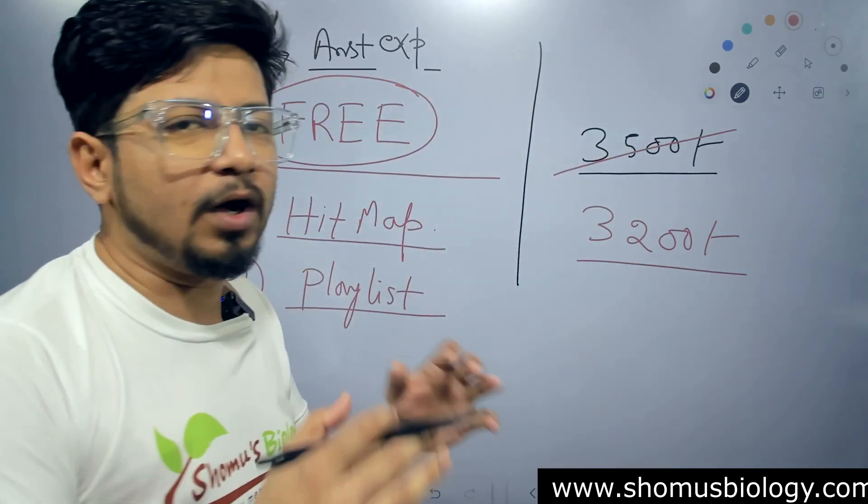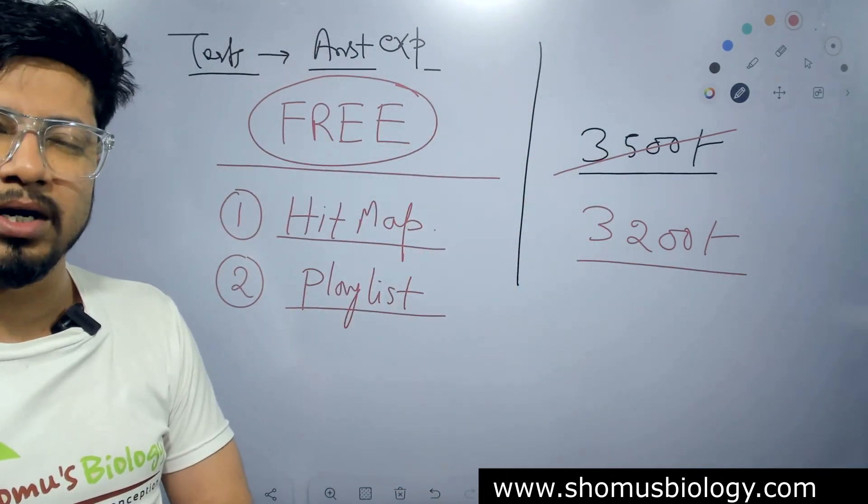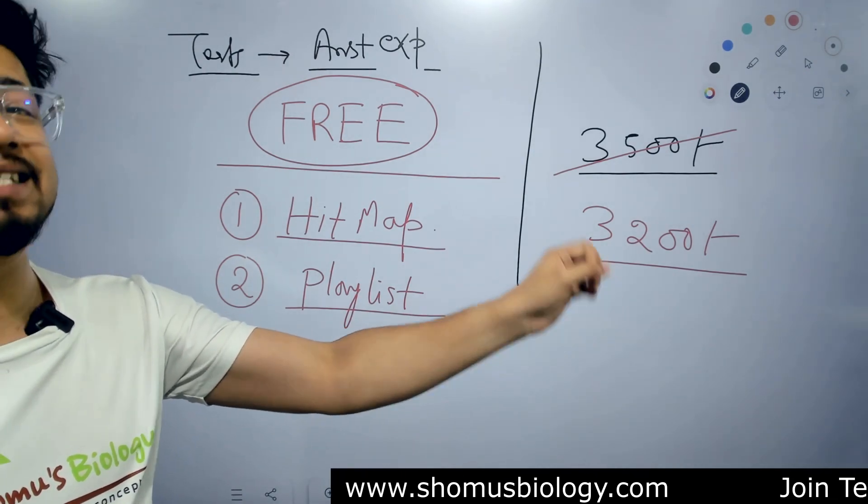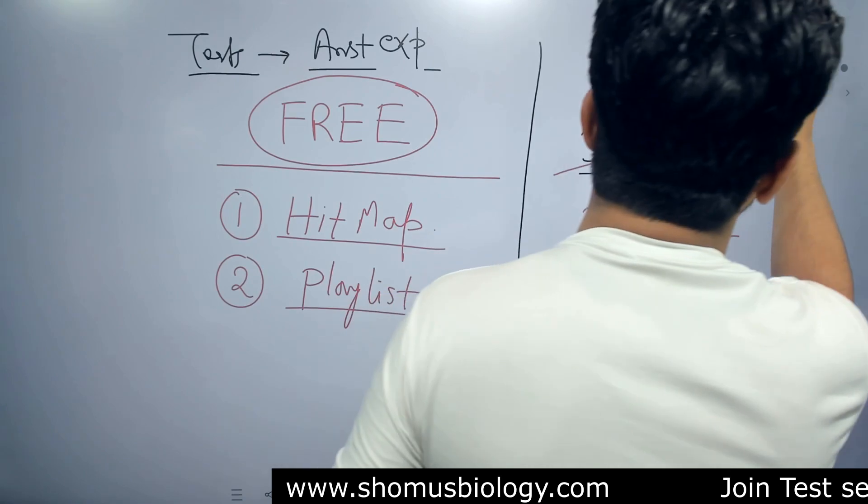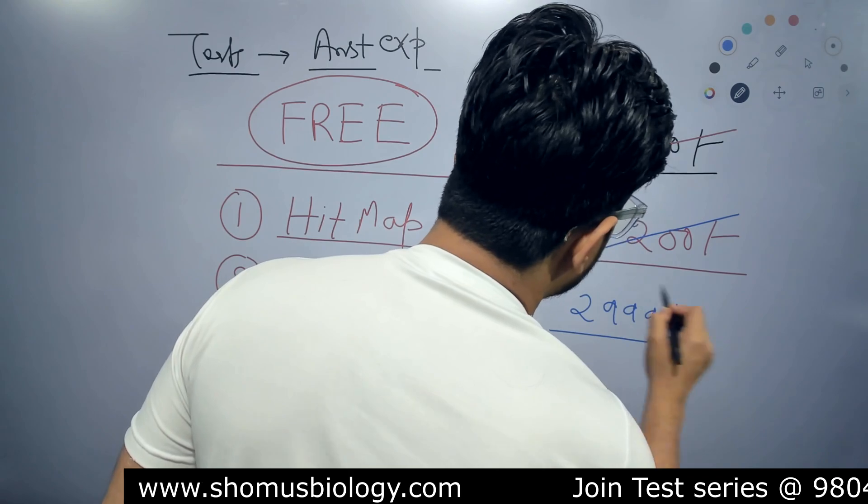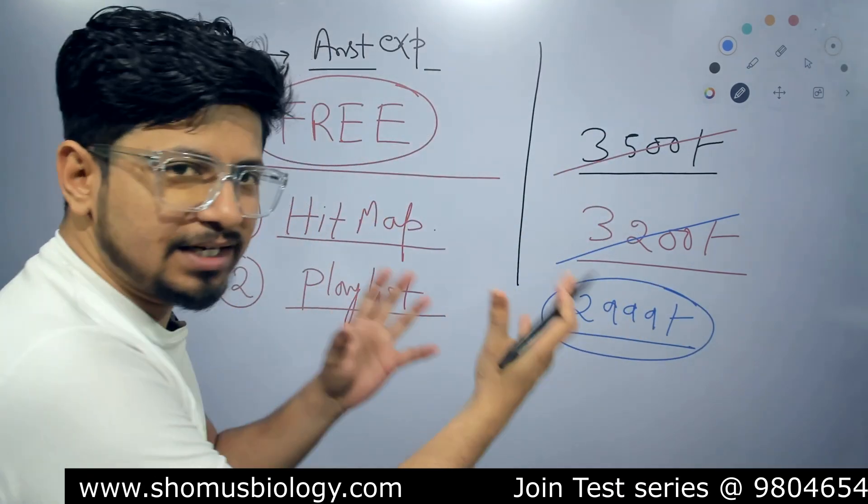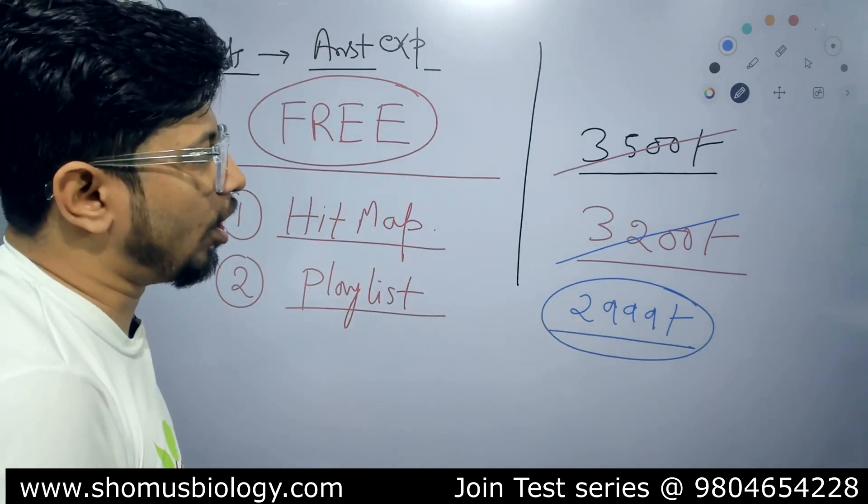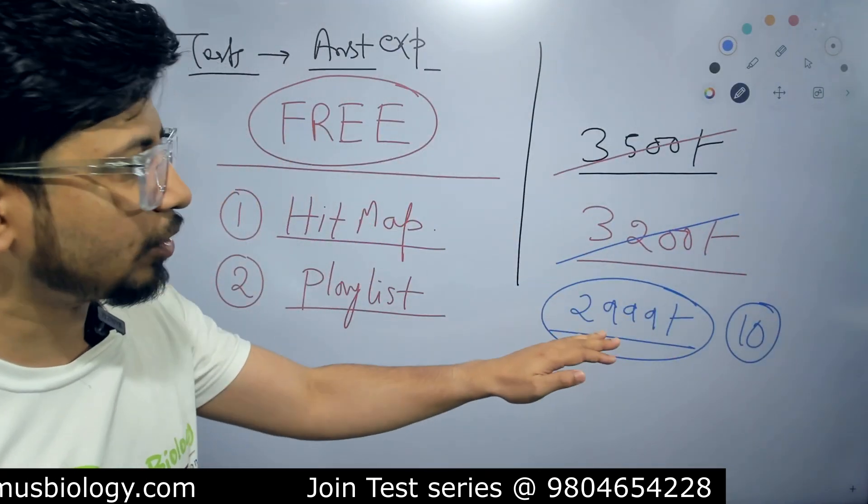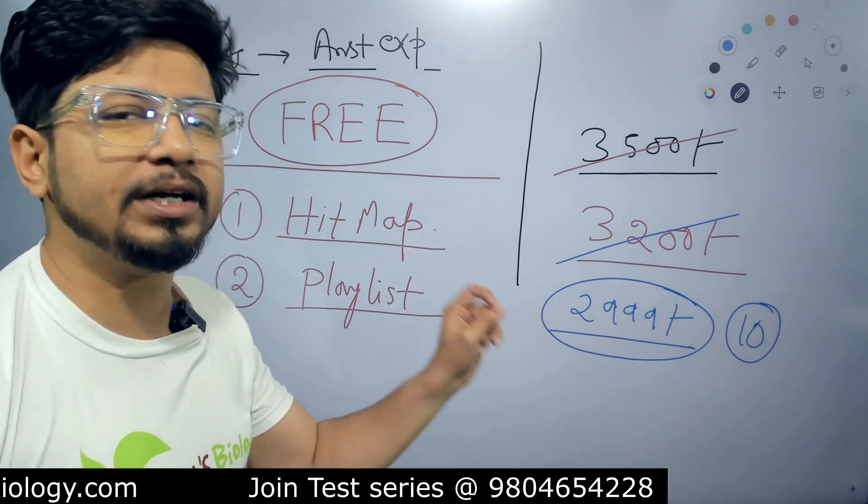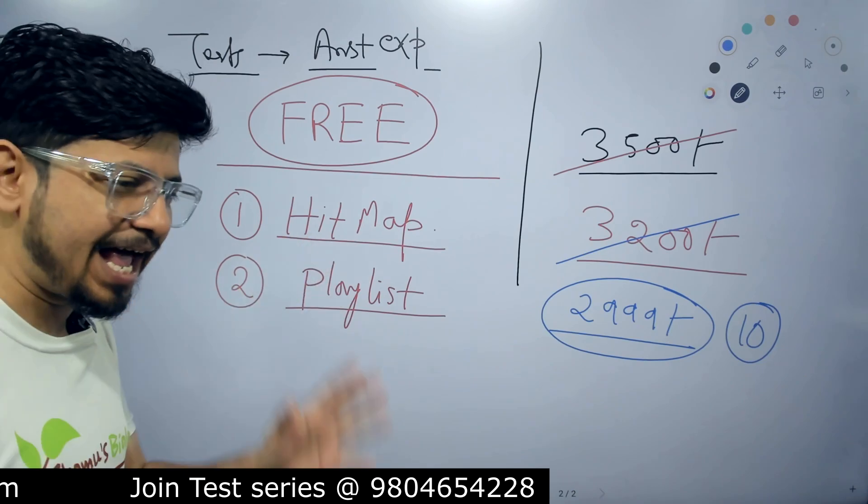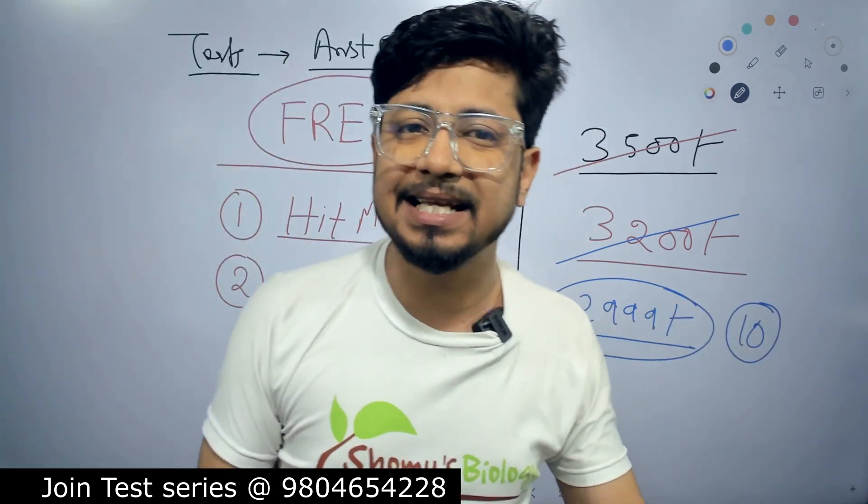For this session, let's make it 3200 for all who join our test series. If you are still not satisfied, let's do one more tweaking. Let's make it 2999 for those candidates who join early. As an early bird discount, if the first 10 candidates join, they will get it for only 2999, including all the facilities, all the tests and everything.